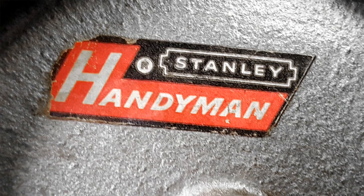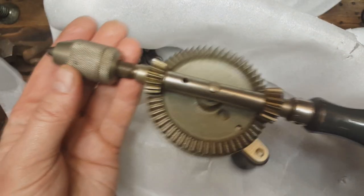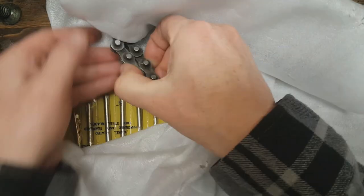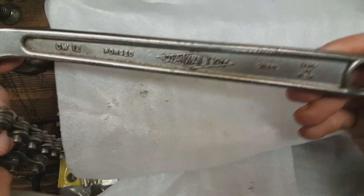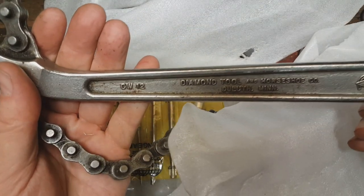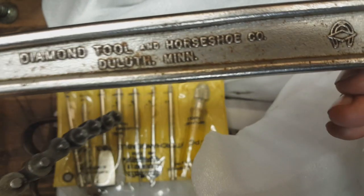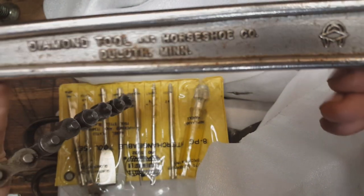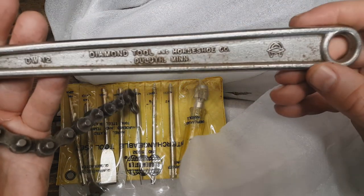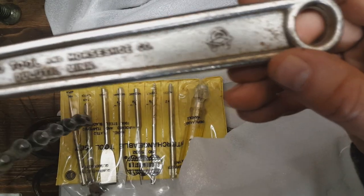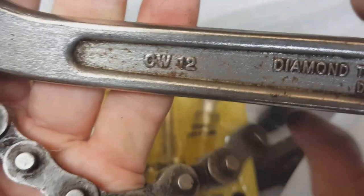Awesome. It's a good-looking tool there. Let's see. We've got a Dime-o-loy pipe wrench here. That's awesome. Diamond Duluth. Diamond Tool and Horseshoe Co. Duluth, Minnesota. Got the logo there. Diamond Horseshoe logo. That is awesome. I love that. CW12. Very cool.